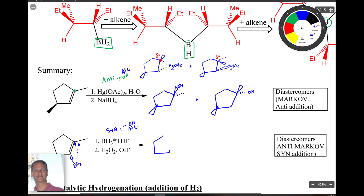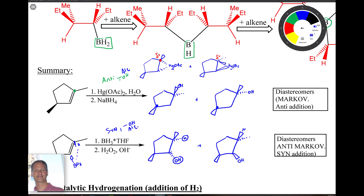The product has an H and OH added syn to each other. I like to keep H drawn in to remember where the OH goes, since they're syn. The other product is its diastereomer — H pointing out and OH pointing out — with the methyl group also present. The key differences: regiochemistry — OH goes to the more-substituted carbon in oxymercuration, but to the less-substituted carbon in hydroboration — and the manner of addition: anti versus syn.